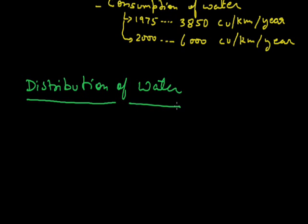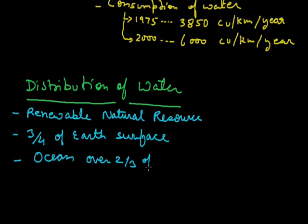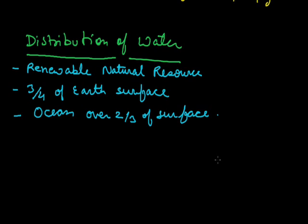If we see our Earth, the water is distributed in all these forms. It is a renewable natural resource which is found in three-fourths of the Earth's surface. And that is why Earth is also known as a water planet or a blue planet. If we come to oceans, then over two-thirds of Earth's surface is covered by oceans only, in which the Pacific Ocean covers 44% of Earth's surface area. This is what we see: that the maximum part of Earth's water is saline water, salty water.